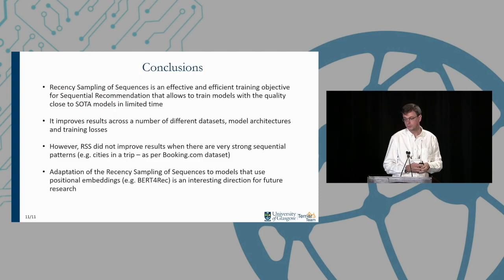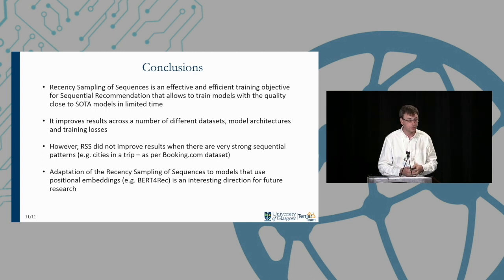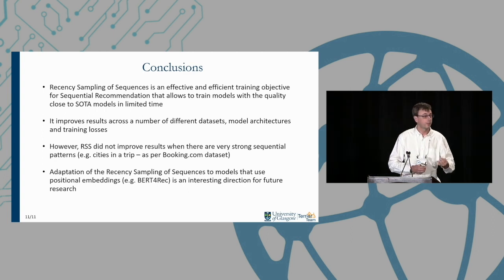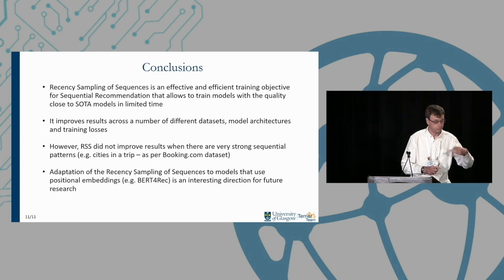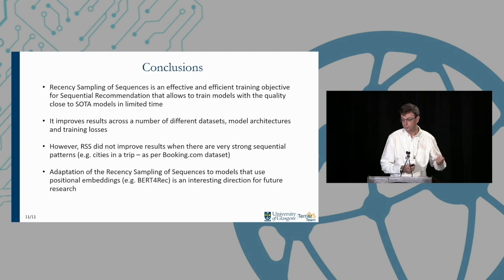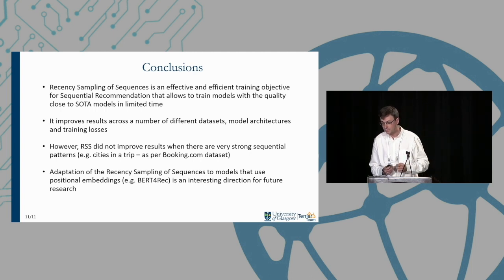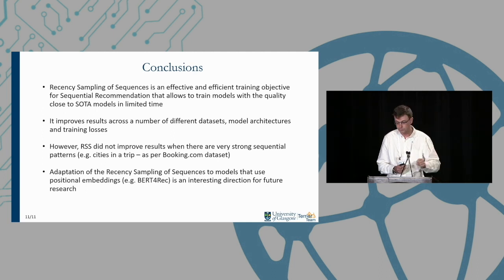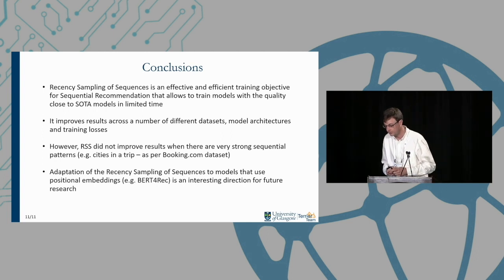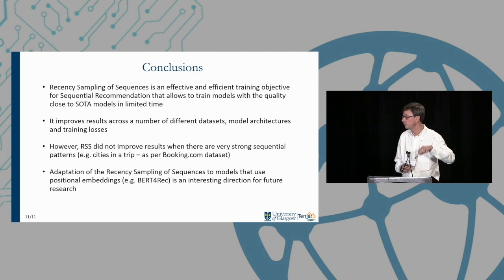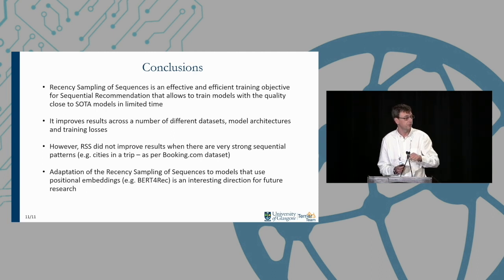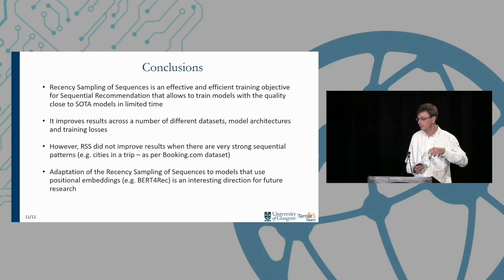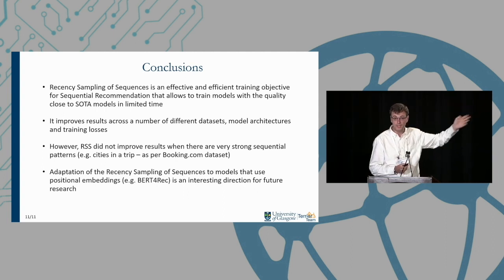In conclusion, I've introduced Recency Sampling of Sequences (RSS) as an effective and efficient training objective for sequential recommendation. In limited training time it yields effectiveness close to or beating state-of-the-art, and improves performance across datasets, model architectures, and training losses. It did not improve on Booking.com, which has strong sequential patterns we couldn't capture as well. Future work includes integrating RSS into BERT4Rec — currently complex due to its positional embeddings — though we're already more effective than BERT4Rec in much less training time.